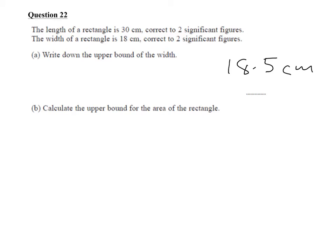Calculate the upper bound for the area of the rectangle. So we know that we get area by doing length times width. So we need the upper bound of the length, which would be 30.5, and we need to multiply that by the upper bound of the width, which we already have said is 18.5.